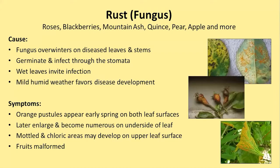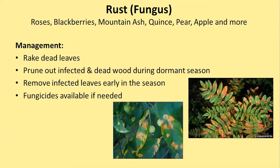The symptoms of rust are orange pustules appearing in early spring on both the upper and lower sides of leaves. Later they enlarge and become numerous on the leaf underside, while on the top the leaves look mottled and chlorotic. On fruit trees, the fruit can become very malformed. For management, rake up dead leaves, prune infected and dead wood during dormancy, remove infected leaves early in the season, and use fungicides appropriate for your specific plant—the fungicide for roses is different from that for apples or pears.